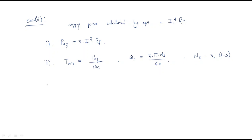The third thing to calculate is the gross mechanical power developed. This equals the air gap power times (1 minus s). The slip s is calculated as: s = (Ns minus Nr) divided by Ns.